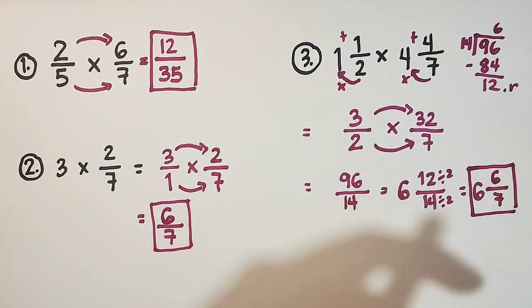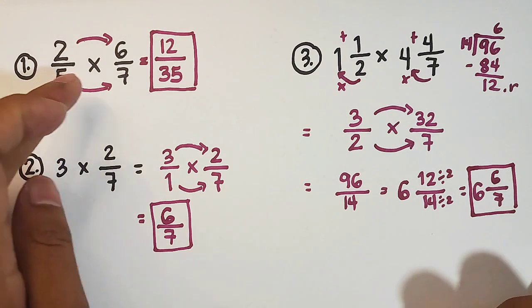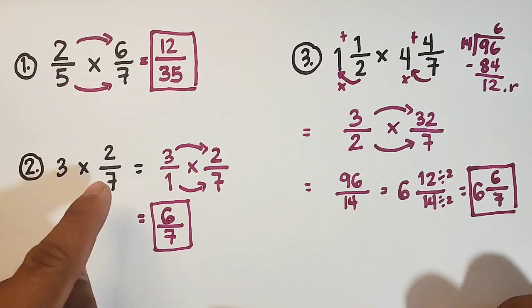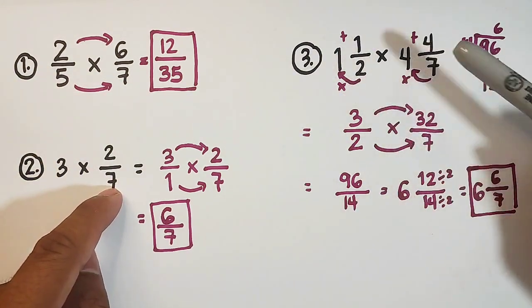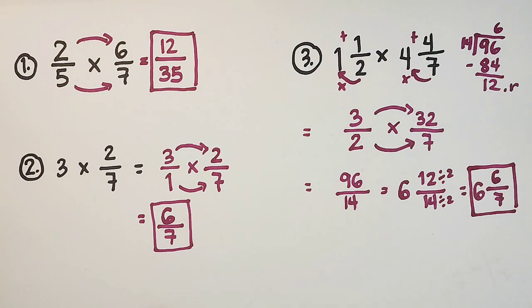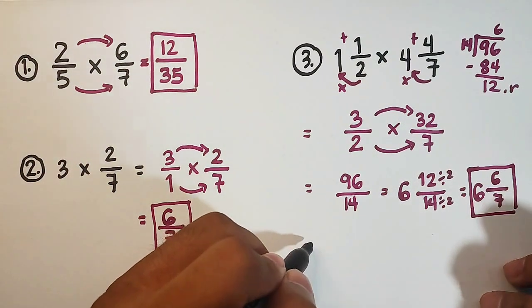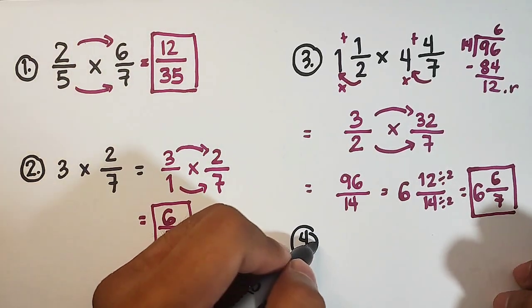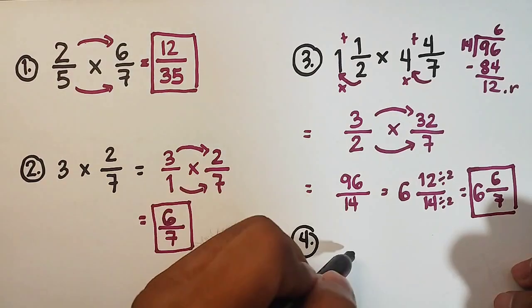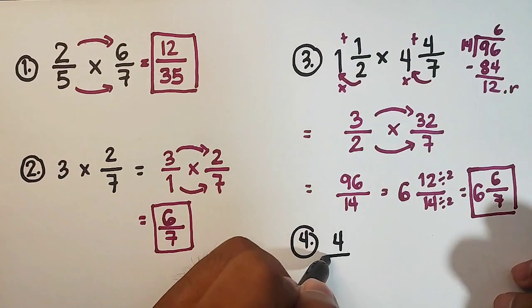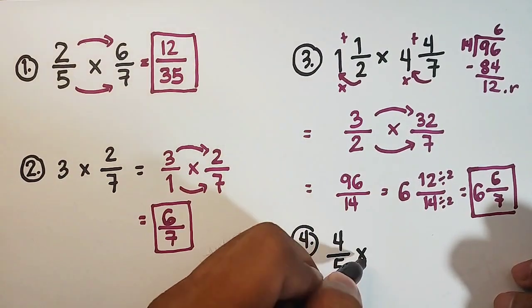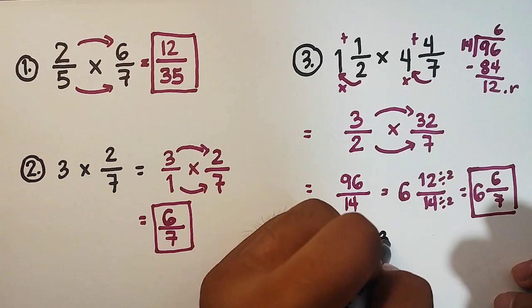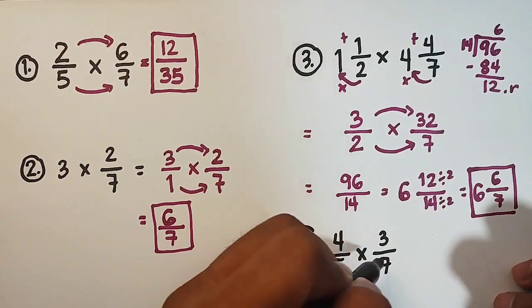So I hope guys you learned something from this video on how to multiply fraction to fraction, whole number to fraction, mixed number to mixed number. And right now, I will give you a simple or a 1 item quiz for this video. I want you to multiply these fractions. We have 4 over 5 times 3 over 7.